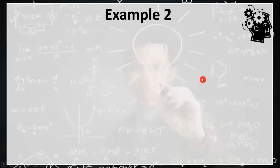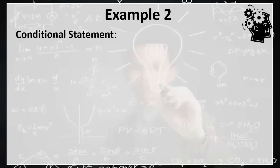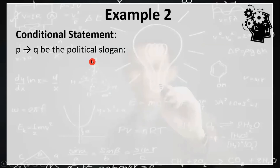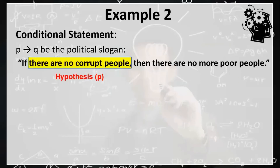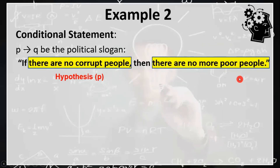Let's try our second example. Consider the conditional statement denoted by P implies Q, which is the political slogan of our former President Benigno Aquino III during his campaign: 'Kung walang kurap, walang mahirap,' or in English, 'if there are no corrupt people, then there are no more poor people.' So based from this conditional statement, our hypothesis is 'there are no corrupt people,' which is denoted by P. And our conclusion is 'there are no more poor people,' which is denoted by Q.